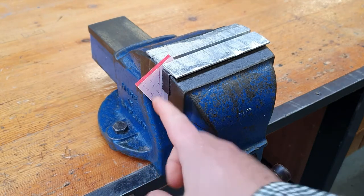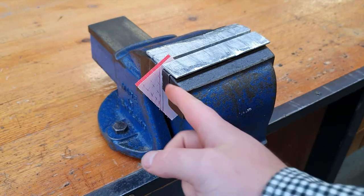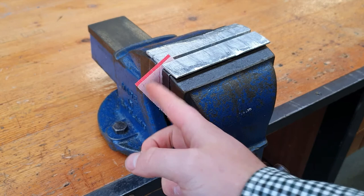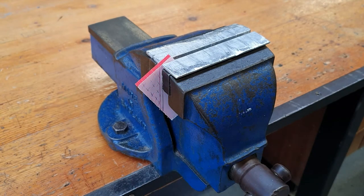Firstly, we cannot cut into our piece, so we're completely eliminating the possibility of error. But also, our red line being in line with the vise jaw actually allows the jaw of the vise to act almost as a guide for the blade of our hacksaw.